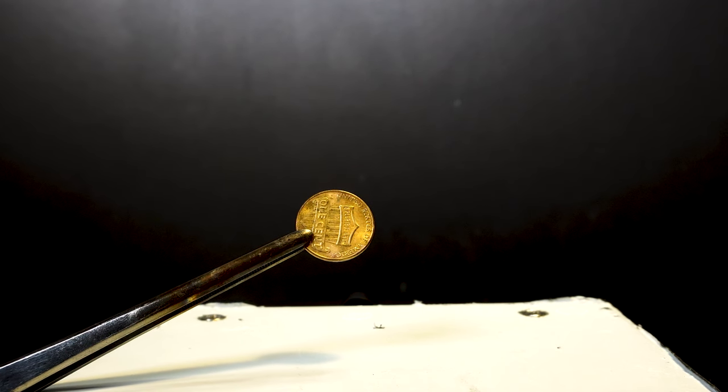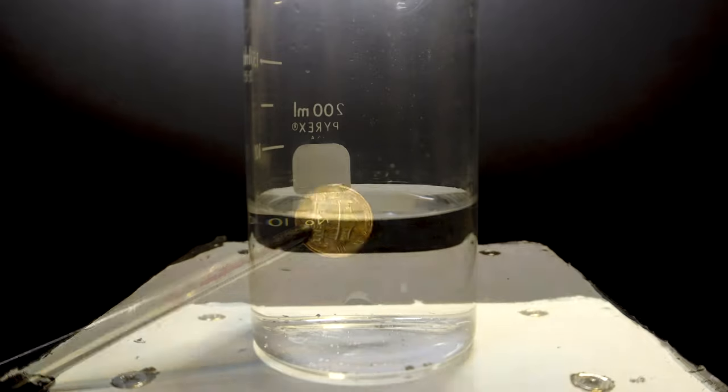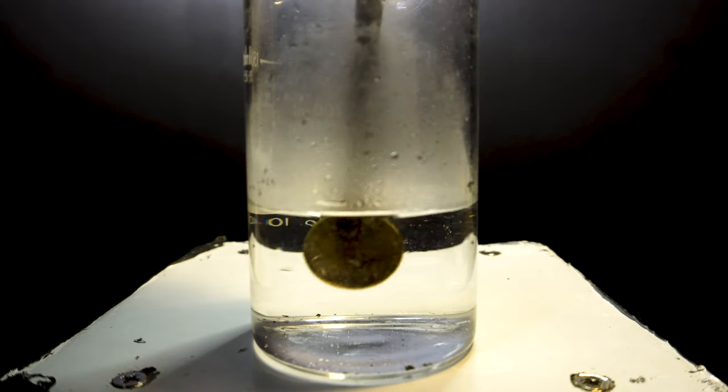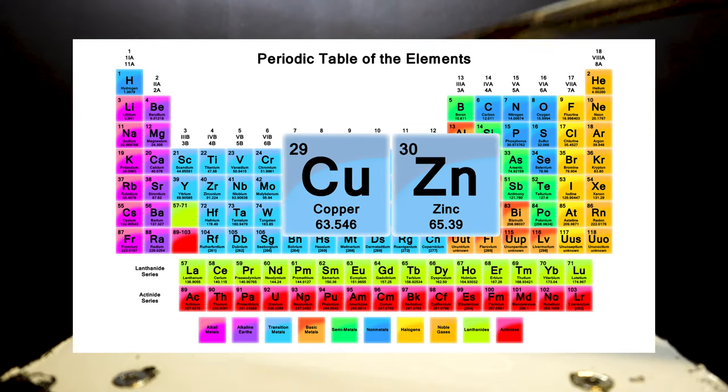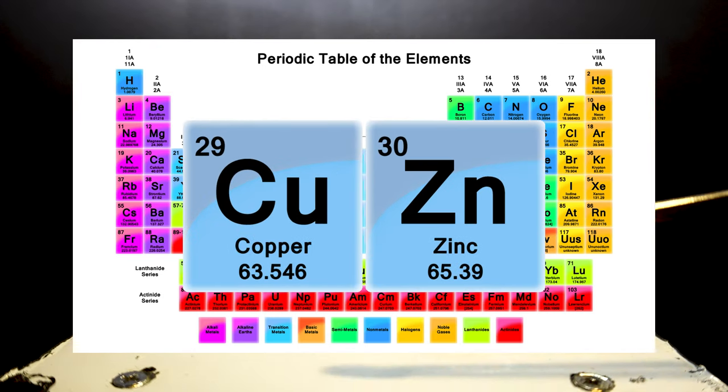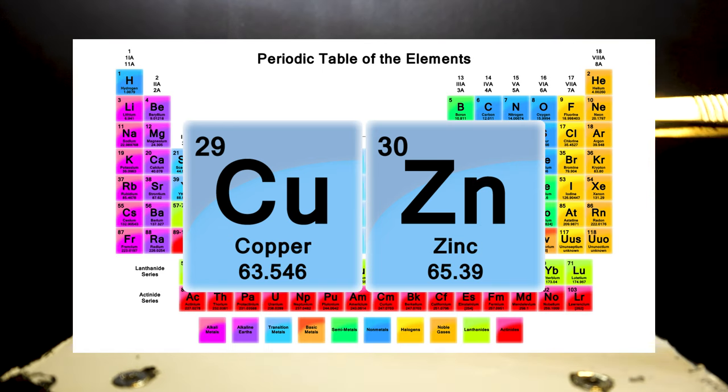When creating alloys there are a lot of ideas that come into play including thermodynamics. Though without getting too much into it copper and zinc are very similar in atomic size so they bond together really easily. The atomic size of each element comes into place when mixing alloys.